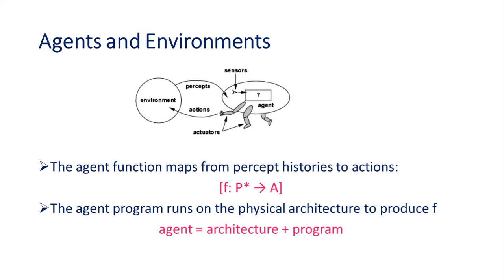Any agent program has a physical architecture — you have sensors, percepts, actuators, and a program running in the background to handle the mapping functions. Everything clubbed together we call it an agent. So an agent is something that has the capability of perceiving the environment and reacting accordingly. It has actuators to perform some action based on the scenario.